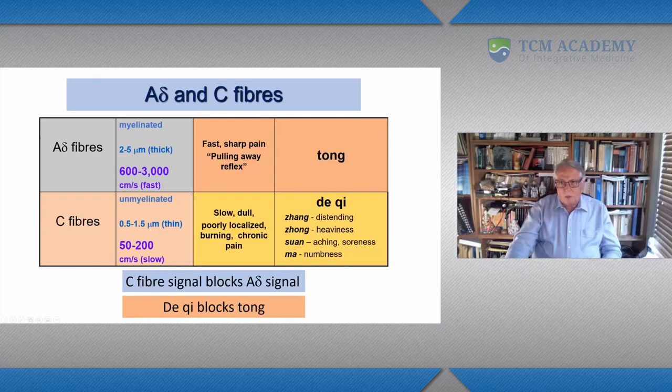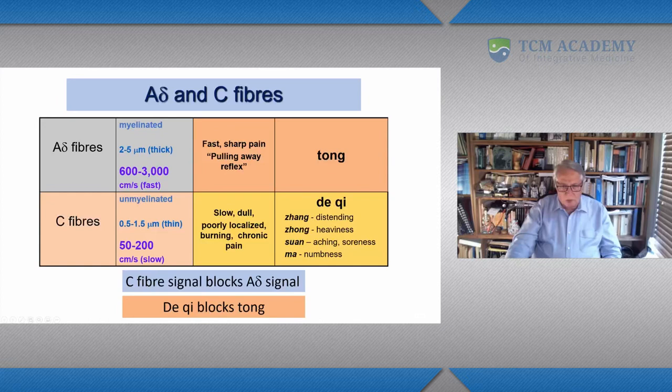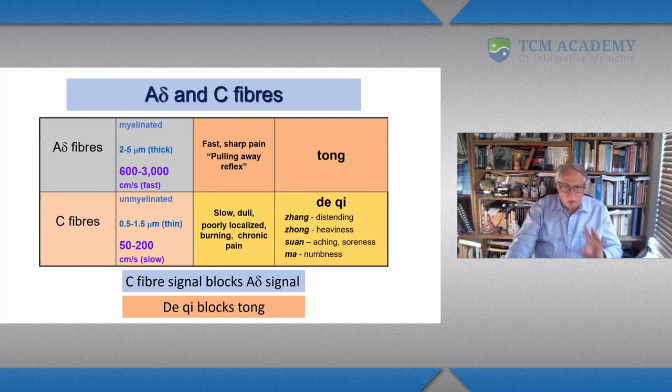Now of course, this is not the whole story. Some of the early interpretations of how acupuncture works for pain was a more painful signal is blocking the pain signal, which of course is not true, because de qi is not a worse experience than tong. The other reason why this is not a complete explanation is because we have techniques which relieve pain which don't necessarily involve de qi.